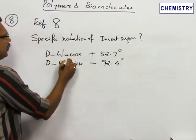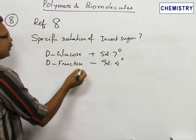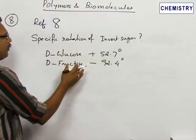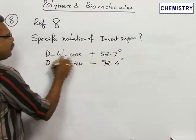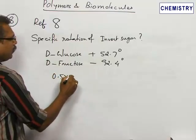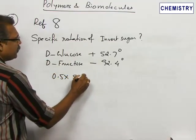we can calculate this. The specific rotation of the invert sugar is the sum of the contribution from D-glucose and D-fructose: 0.5 into 52.7 degrees.